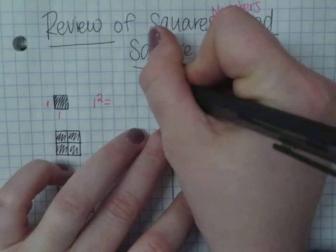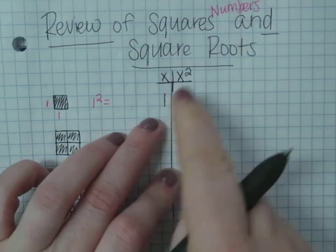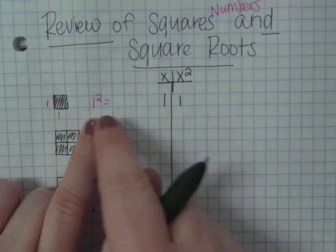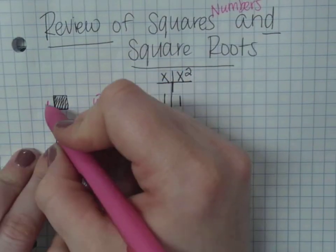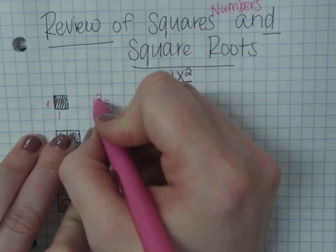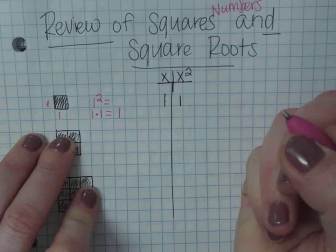So in our table, I'm going to put x, and then I'm going to say x squared. So this number squared. So 1 squared, or 1 times 1, remember that squared means that it's actually 1 times 1. So 1 times 1 is just 1.